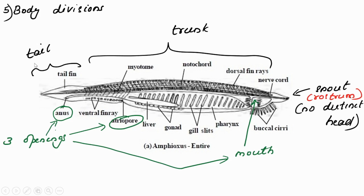The body can be divided into tail, trunk, and snout. The body possesses three openings: the mouth, the atriopore (the opening of the atrium, which is an ectoderm-lined cavity), and the anus. The anterior end has the notochord extended further forward to form the snout, otherwise called the rostrum.